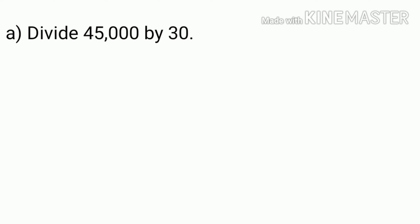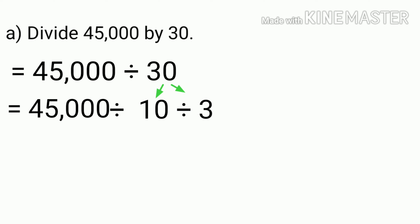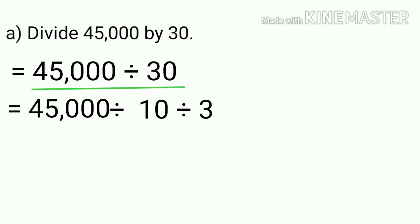Look at this example: divide 45,000 by 30. To make this division easier, let's rewrite this by splitting 30 into 10 and 3. Because 45,000 divided by 10 divided by 3 is the same as 45,000 divided by 30.